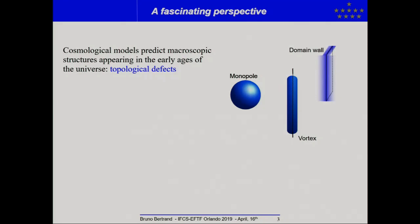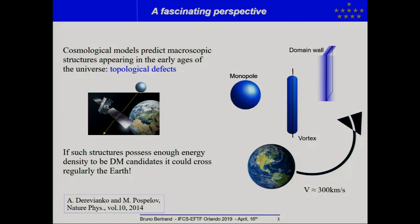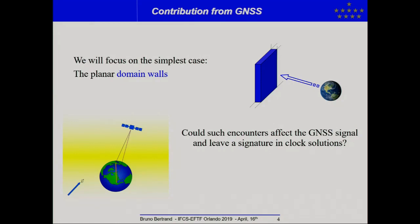And there are different shapes. You have a sphere-like monopole, string-like vortices, and planar-like domain walls. And it's opened a fascinating perspective because if such structures possess enough energy density to be dark matter candidate, it would cross regularly the trajectory of the Earth, and so it could be accessible to measurement with devices, high-precision devices on Earth.